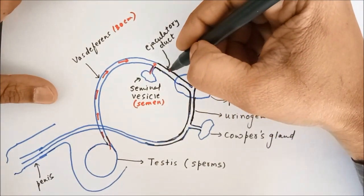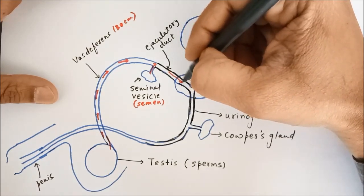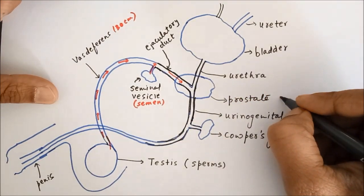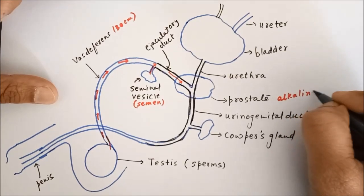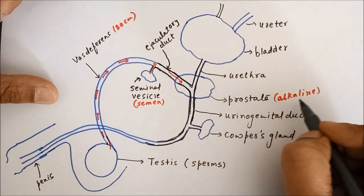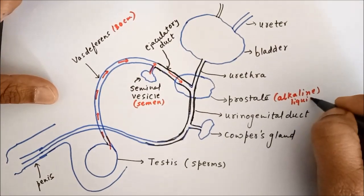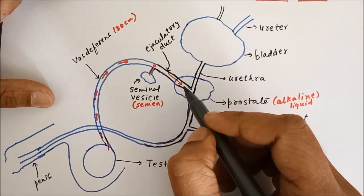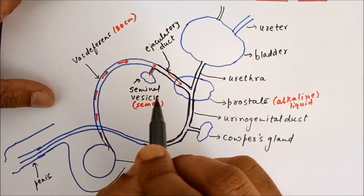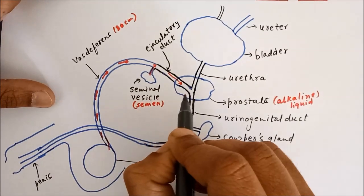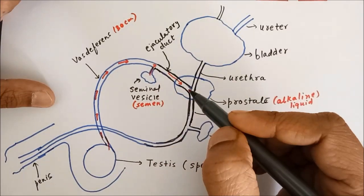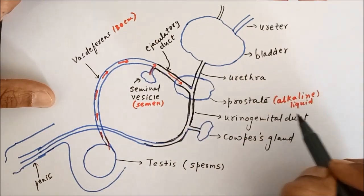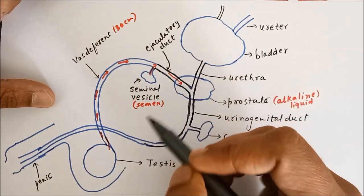Then the sperm goes ahead, and this prostate gland secretes an alkaline liquid. This alkaline liquid is added to the semen and sperms, so that when the semen and sperms travel through the vagina of the female reproductive system, they do not die due to the acidic content. In the female reproductive system, the vagina is quite acidic in nature, so this alkaline liquid helps the semen to travel through the vagina.